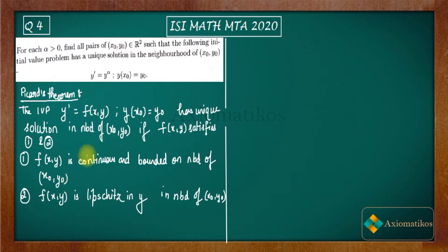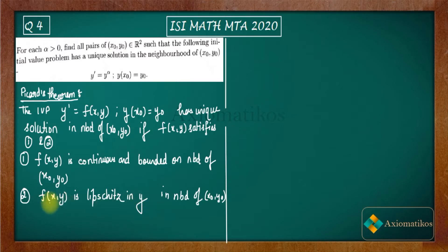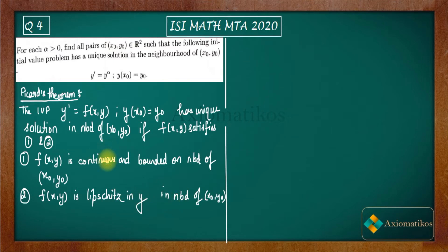The first condition says that f(x,y) should be continuous and bounded in the neighborhood of (x₀, y₀). The second condition says that f(x,y) should be Lipschitz in y. We have two variables so it could be Lipschitz in x also, but the theorem demands that the function should be Lipschitz in y in the neighborhood of (x₀, y₀).